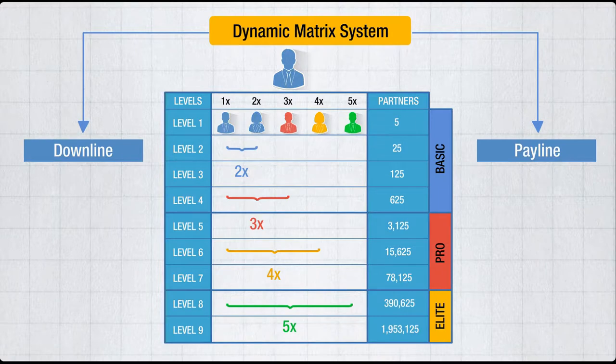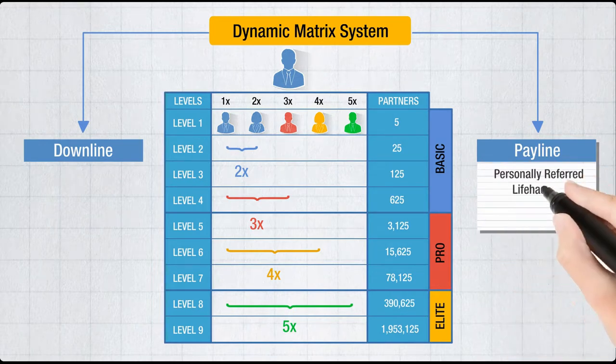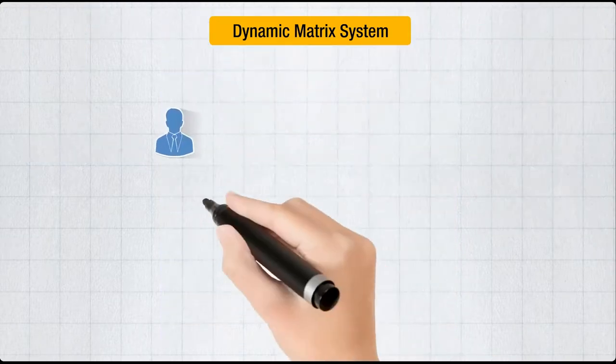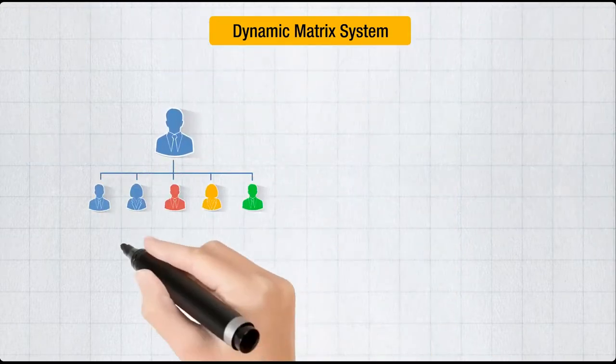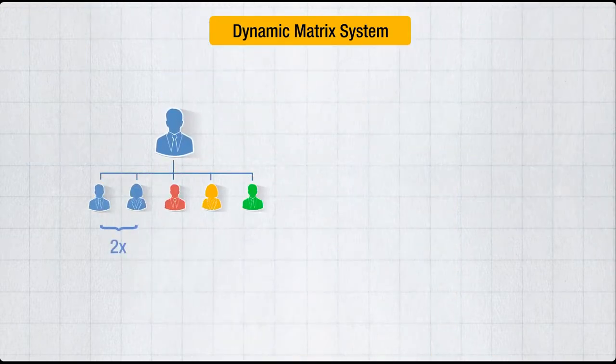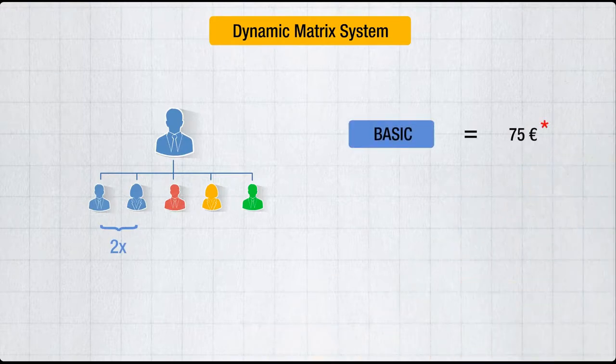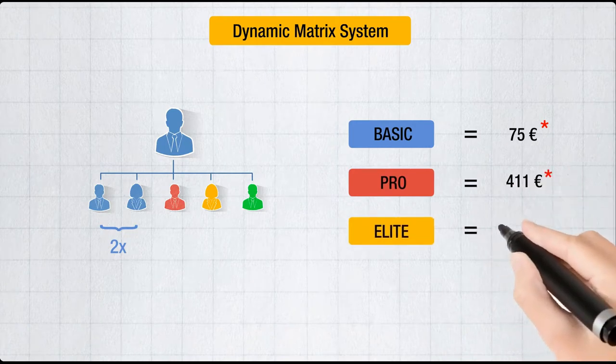Payline is the part of your matrix that gets you commission. It's defined by two factors: the number of life hackers you've referred personally and the Bismo subscription you've made. You get commissions on your 2x matrix even before referring anyone. With Basic you earn up to 75 euros, so you can easily switch to Pro or Elite and earn up to 1,563 euros.